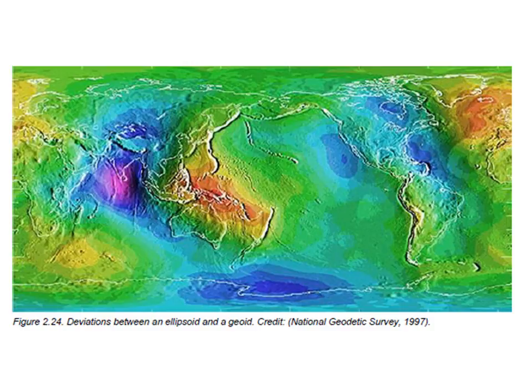One of the other things that we do is we look at the deviations between an ellipsoid and a geoid. These are just two theoretical models of the shape and size of the Earth, and we're interested in seeing how these deviate over space and what is the impact of variations, for example, in gravity on the shape and size of the Earth.